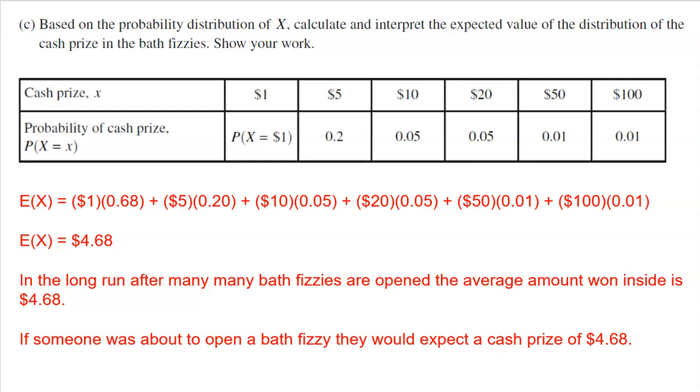All right, two more questions here. So question C, based on the probability distribution of X, calculate and interpret the expected value of the distribution of the cash prize in the bath fizzies. Now there's two ways you can get this answer. You could do it by hand or use your calculator. Doing it by hand is pretty easy. You just take each outcome times its probability or times its proportion and add them all together. Pretty simple formula here. But again, you can also go and grab your calculator.